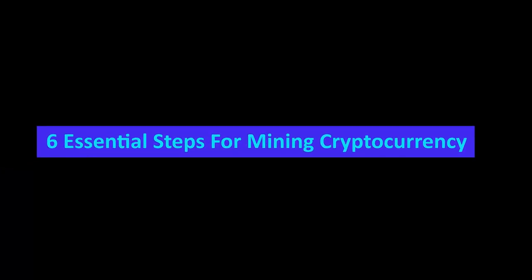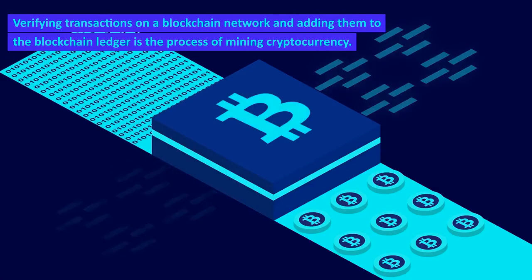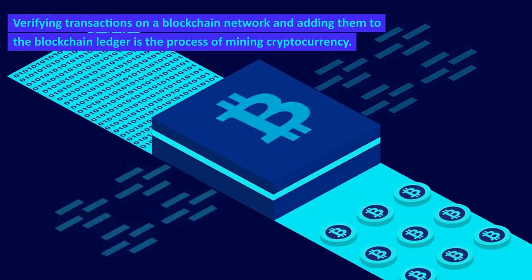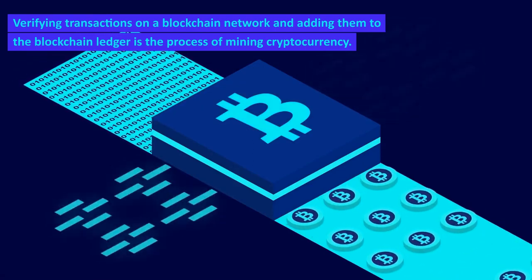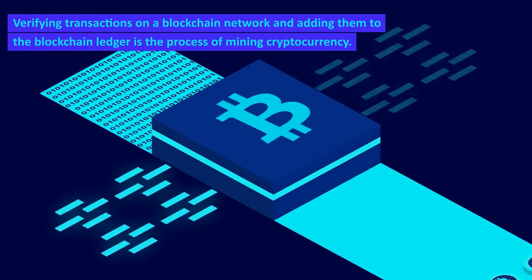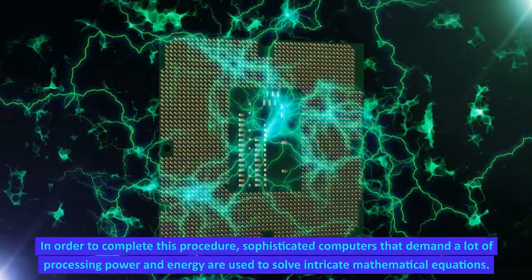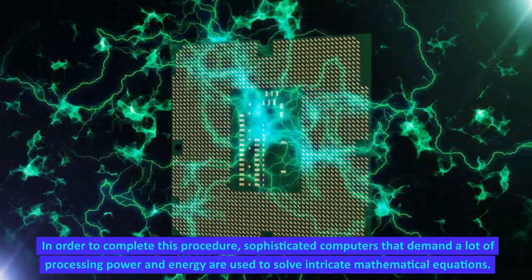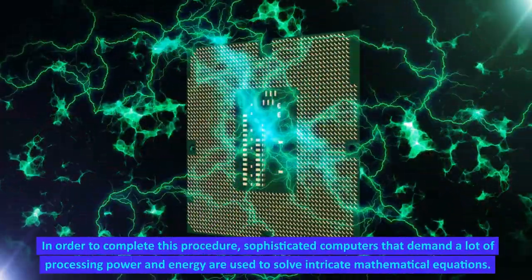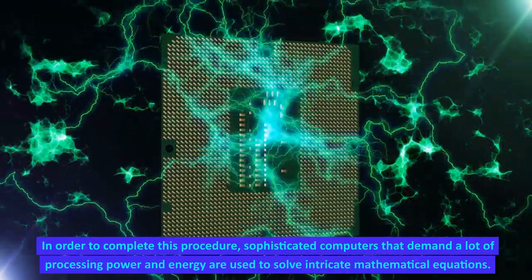Six essential steps for mining cryptocurrency. Verifying transactions on a blockchain network and adding them to the blockchain ledger is the process of mining cryptocurrency. In order to complete this procedure, sophisticated computers that demand a lot of processing power and energy are used to solve intricate mathematical equations.